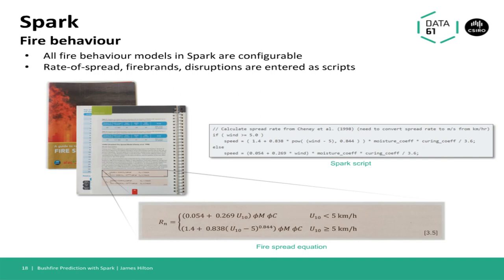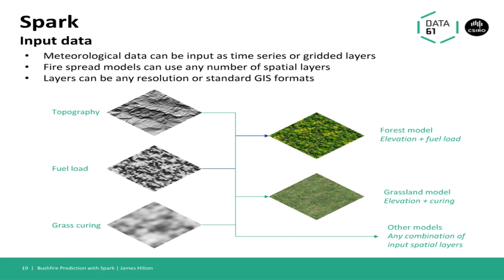A key part of the SPARC system is seeing exactly what model you've used in case you need to check or audit what you've run. Likewise, the input data can be a variety of types. Generally, weather can be a time series — for example a forecast — or a gridded product such as the gridded BOM forecast. SPARC can also be used with any number of spatial layers for various fuel models; these can be any format or resolution and SPARC will handle all the conversion. For example, you might have a forest model requiring elevation and fuel load, and a grassland model requiring elevation and curing. You can have any number of layers, combinations, and models. Once set up, you don't need to go back and reconfigure — it allows the fuel models and input layers to change as they get updated.